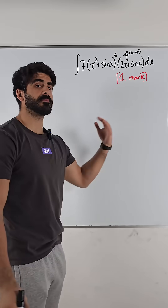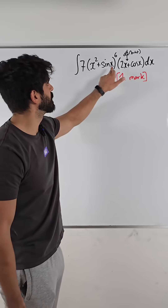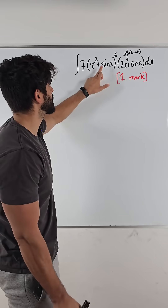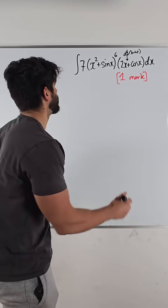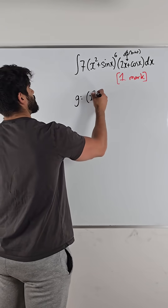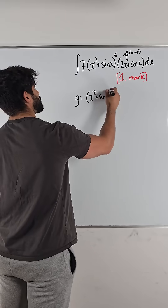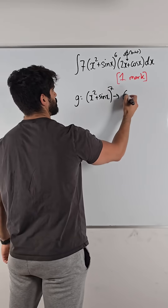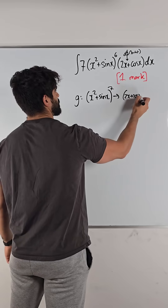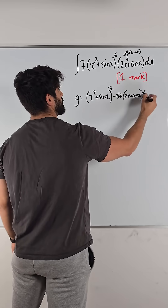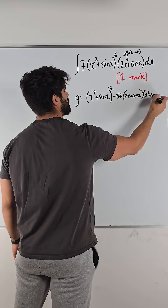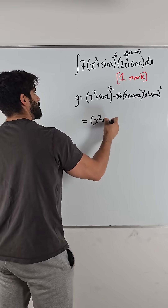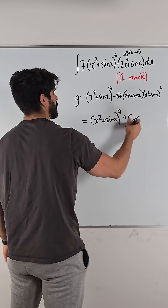When we reverse that process, this will disappear, and because this is a power function — aka a power function — we expect this to go up by one power. So we always check our answer; we expect this to go up by one power. Now you just differentiate to check. So you differentiate what's inside — we get 2x plus cos(x). Then we bring down the power and knock one off the power. And what do you notice? That is literally this. So it just integrates to this function.